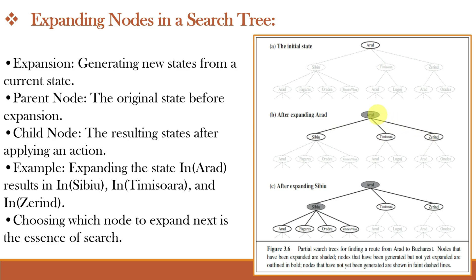The parent node expands into child nodes creating a branching structure. For example, expanding the state in Arad results in states in CBU, Timisora and Zerin. Choosing which node to expand next is the key aspect of search.